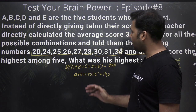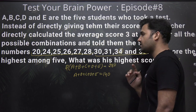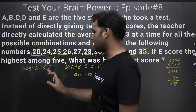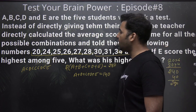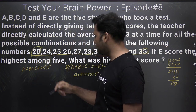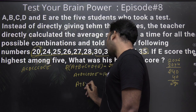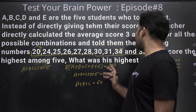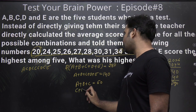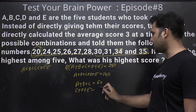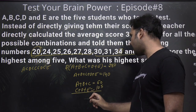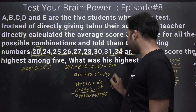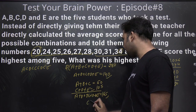Now, if E scores the highest, we can arrange the values in increasing order. The lowest possible average will come from A, B and C — the three smallest — so A+B+C = 20×3 = 60. The highest average comes from C, D and E, so C+D+E = 35×3 = 105. Adding these: A+B+2C+D+E = 165. Since A+B+C+D+E = 140, subtracting gives C = 25.